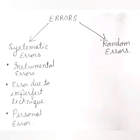Now let us discuss random errors, which are totally different from systematic errors. Random errors are caused due to random mistakes for which the source of error is not known. In systematic error we already know the reason behind the error and those errors could be rectified. But in random error the source is unknown, hence it cannot be rectified or controlled.